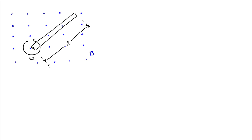Our goal is to find the potential difference established between the ends of the bar. From what we've learned before, we know that a conductor moving through a uniform magnetic field will have an electric field induced between its ends. The magnitude of that induced electric field equals the product of the conductor's speed and the magnitude of the magnetic field. But since this conductor is rotating, what speed do we use?